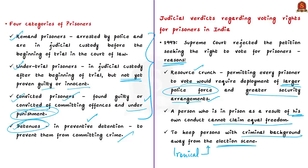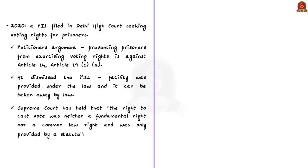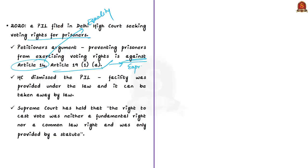A recent 2020 petition in Delhi High Court also sought voting rights for prisoners, arguing that preventing prisoners from exercising voting rights was against Article 14 (right to equality) and Article 19(1)(a) (right to freedom of expression). But the Delhi High Court dismissed the petition, saying the facility was provided under the law and can be taken away by law. The High Court also quoted the Supreme Court's position that the right to cast a vote is neither a fundamental right nor a common law right, but only a statutory right. So far, voting rights for all kinds of prisoners have not been granted in India.